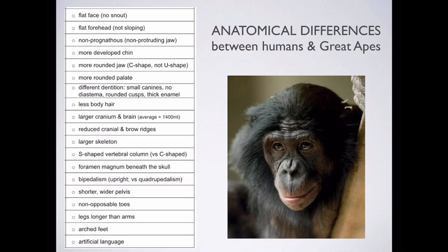The reason for the S-shaped vertebral column is because of the fact that we are bipedal. One of the things that enables us to be bipedal is the fact that our foramen magnum — the hole in the cranium through which the brain stem extends, where the nervous tissue that is your brain becomes your spinal cord — is positioned differently. For us it is right underneath our skull, whereas for the great apes it is at the back of the skull.